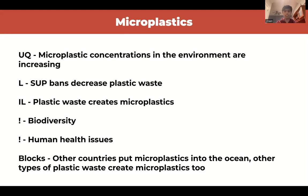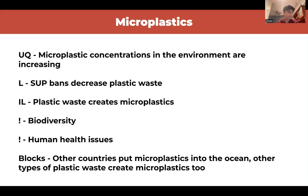The big blocks are that other countries put more microplastics into the ocean than we do. The AF can get around this by saying that other countries aren't dumping microplastics into places like the Great Lakes or bottled water — that's happening right here in the US, and if the US cuts down, we'll see a cut down on microplastics in our own environment. Another block is that reusable plastics also create microplastics and are equally dangerous — but the AF responds that single-use plastics are disposed of more often, creating more microplastics and more health problems.